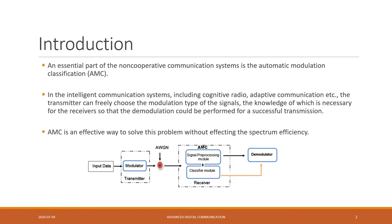Here is a brief introduction to Automatic Modulation Classification (AMC). It is an important part of non-cooperative communication systems. As you can see in this figure, the AMC block is present at the receiver's end, where the received signal is sent to the AMC block. Some pre-processing is done, important features of the signals are extracted, and then sent to the classifier module, which classifies the type of modulation being used at the sender's end. This information is then sent to the demodulator.